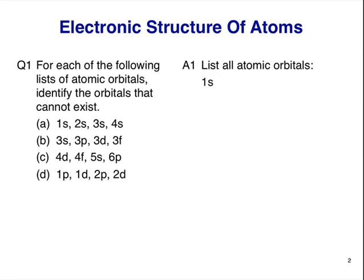In the first shell, there is only one subshell or orbital. This is the 1s subshell. In the next shell, there are two subshells or orbitals. These are the 2s and 2p subshells. The next shell has three subshells or orbitals. These are the 3s, 3p, and 3d subshells.